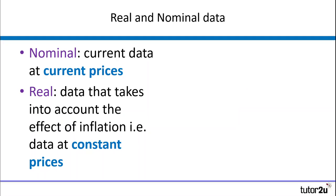So if you are presented with data in an economics exam — typically data relating to GDP — you can see this expressed in two different ways. It may well be the case that you are told that the data is nominal or that it is real. Alternatively, it might say that the data is presented in current prices, which means nominal, or constant prices, which tells you that the data is real. So do watch out for those phrases.